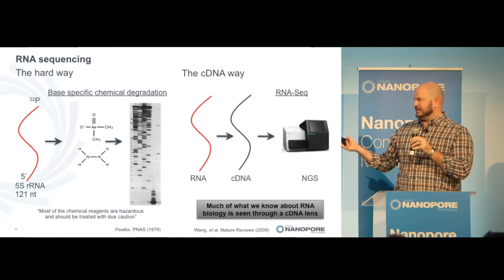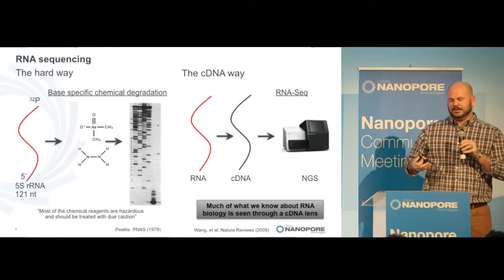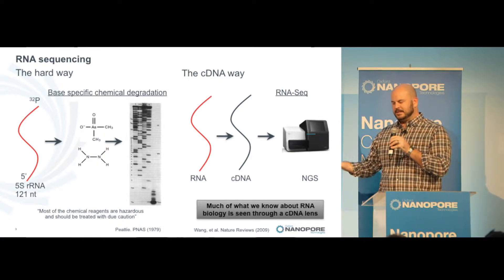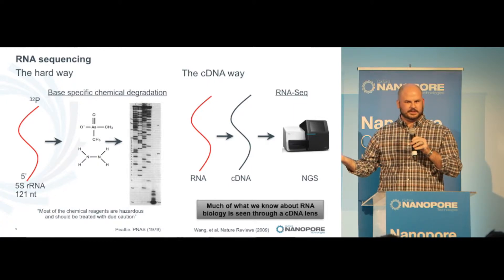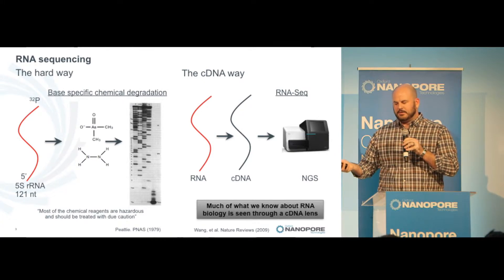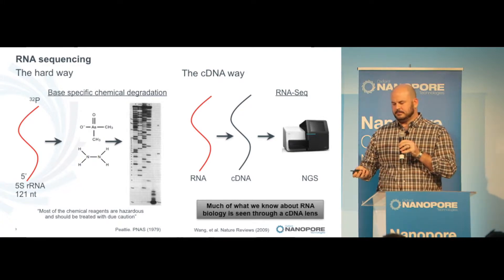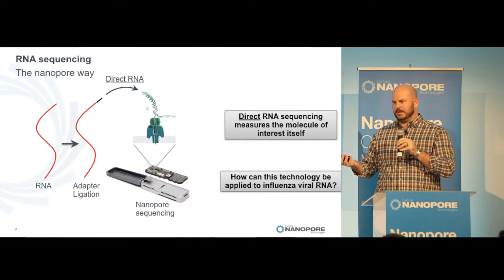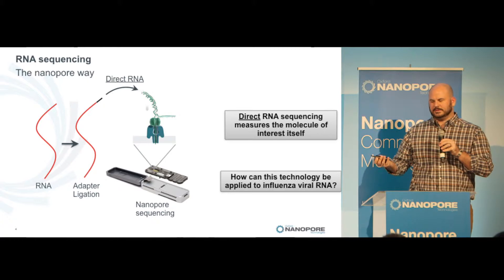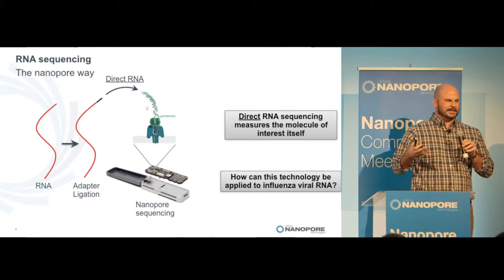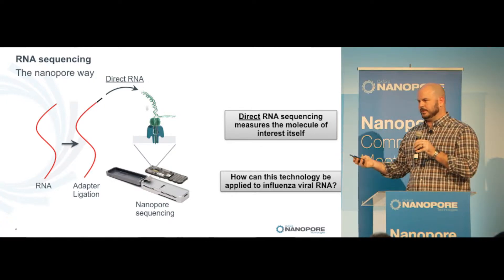Direct RNA sequencing hasn't advanced much since then. Rather, people have worked on the cDNA approach, where RNA is copied into a cDNA and analyzed on any number of pipelines. This has been an extremely powerful technique and told us a lot, but much of what we know about RNA biology is still seen through a cDNA lens. This is where RNA sequencing the nanopore way comes in — RNA is ligated to an adapter which feeds it through a pore for sequencing. The key point is direct RNA sequencing: it's measuring the molecule of interest itself, not a copy.